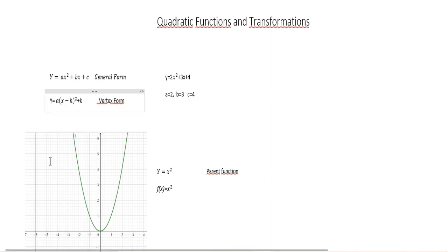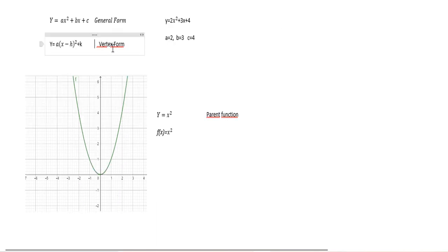Another way to represent quadratic functions is in vertex form: y = a(x - h)² + k. We're going to see this later.